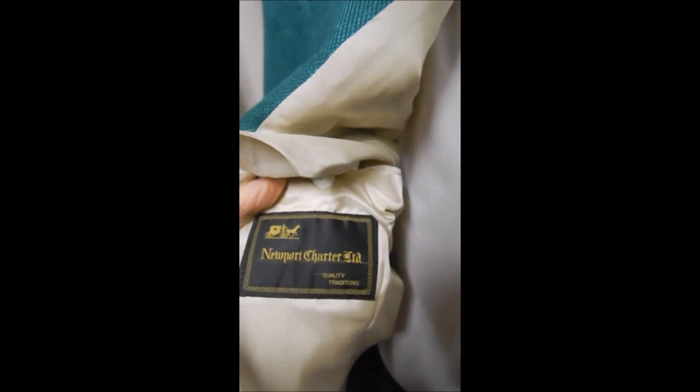Here's the Newport Charter. Everything we've gotten from them has been wonderful. It's full satin lined, and over here we see the contents is wool, silk, and 20% CV, whatever that is.